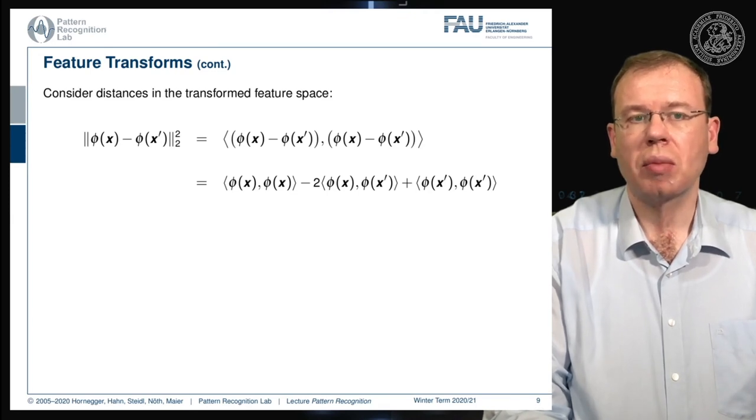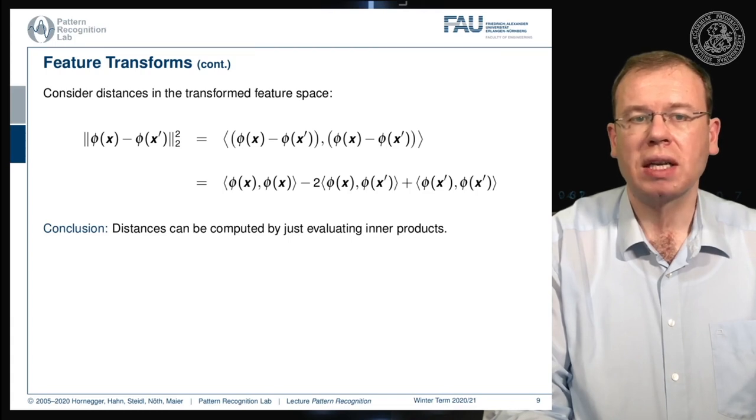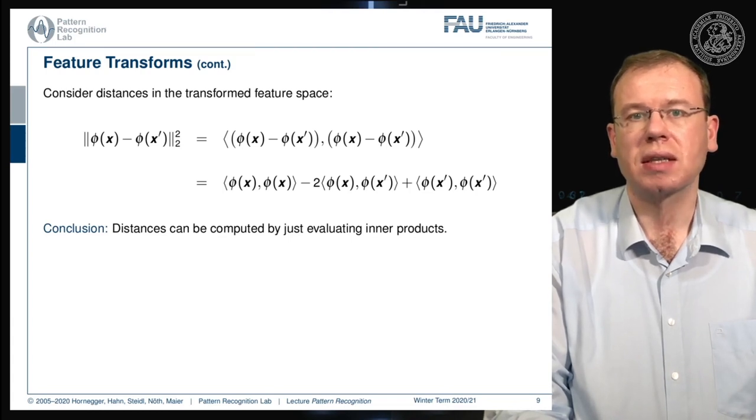So the 2 norm of our transformed spaces can be written only by using inner products. With this kind of feature transform we can even evaluate distances only by the means of inner products.